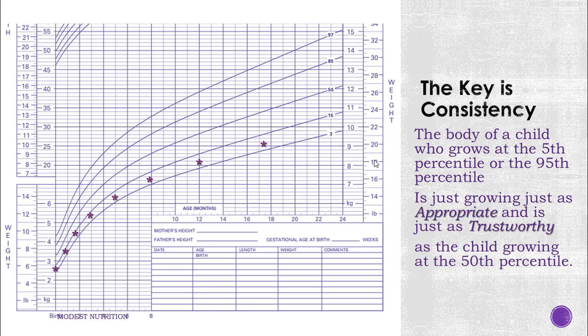And this is normal. It is as normal for a child to be growing at a different percentile as long as their growth is consistently on that pattern. Whether it's the 5th percentile or the 97th percentile, the key is consistency.